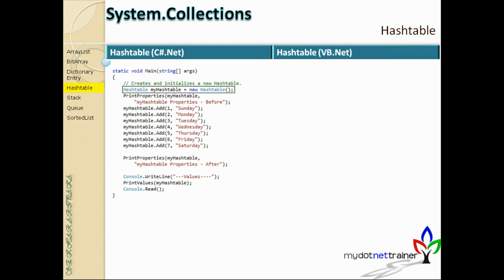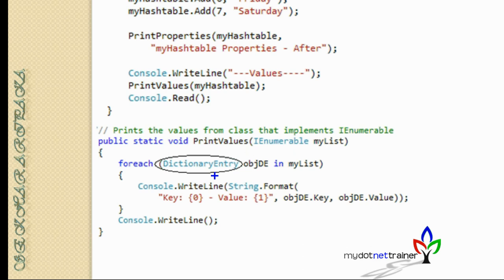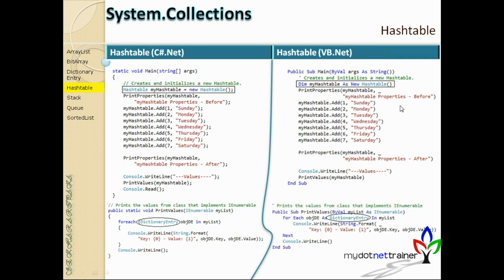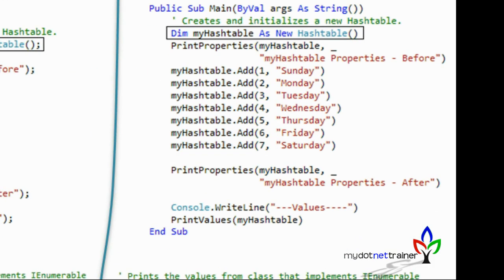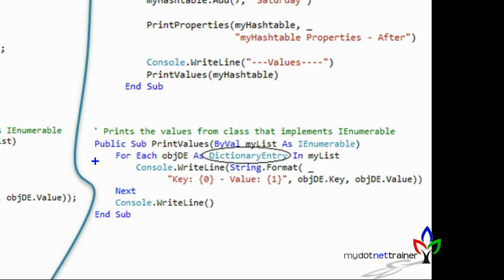If you have a large number of values, using an ArrayList with DictionaryEntry manually is not efficient — it wastes memory and is slow. Using HashTable is much more efficient because it makes use of the hash code algorithm for lookup. The same HashTable is available in VB.NET using the same Add method and the same foreach syntax to read values.